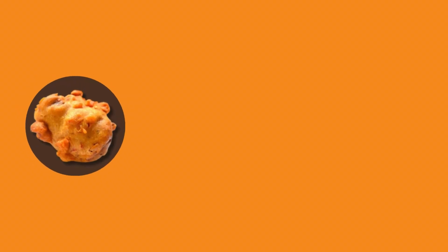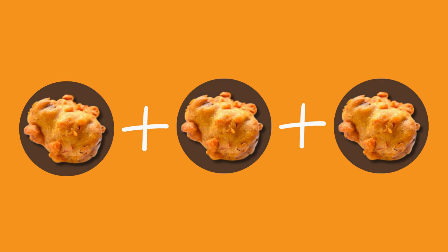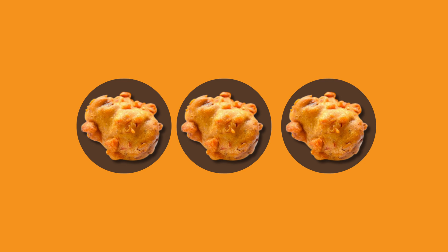Did you know that addition is also called the joiner friend — the friend who brings everything and everyone together? For example, if you have one akara and then the joiner friend gives you another two akara, you have three akara all together. You bring everything together and they become three.